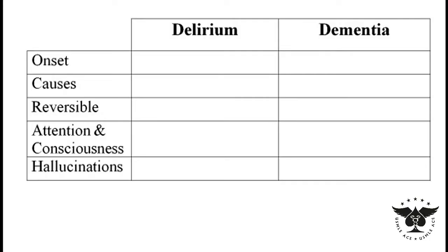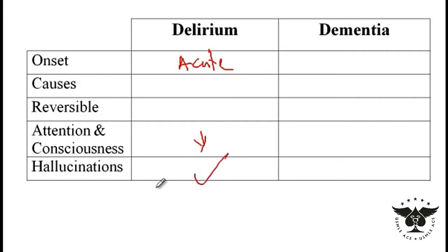In this video I would like to go over the difference between the presentation of delirium and dementia, and then go over the causes of each. With delirium, the onset is usually acute, and these patients present with decreased attention and decreased consciousness, and hallucinations are commonly present.